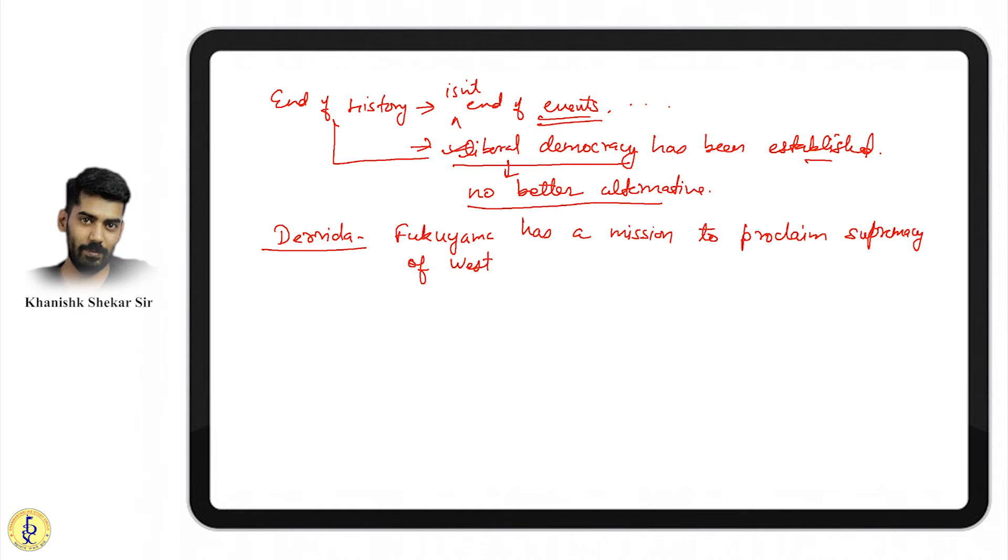Derrida said Fukuyama has ambition, questioning his claims about Western supremacy. Samuel Huntington, whom we've quoted earlier, claimed something called Clash of Civilizations and the Remaking of World Order, which he wrote at length in 1996.